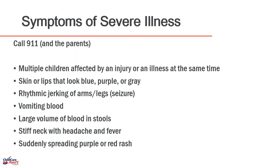Any child that has skin or lips that look blue, purple, or gray, any abnormal rhythmic jerking of arms and legs that may indicate seizure activity, vomiting of large amounts of blood, large volume of blood in stools, or a stiff neck with a headache and fever — all require calling 9-1-1. Most immediately, a suddenly spreading purple or red rash is an emergency.